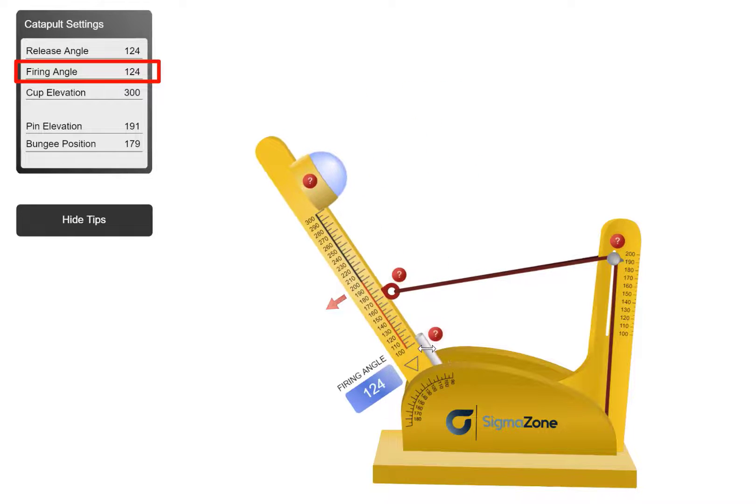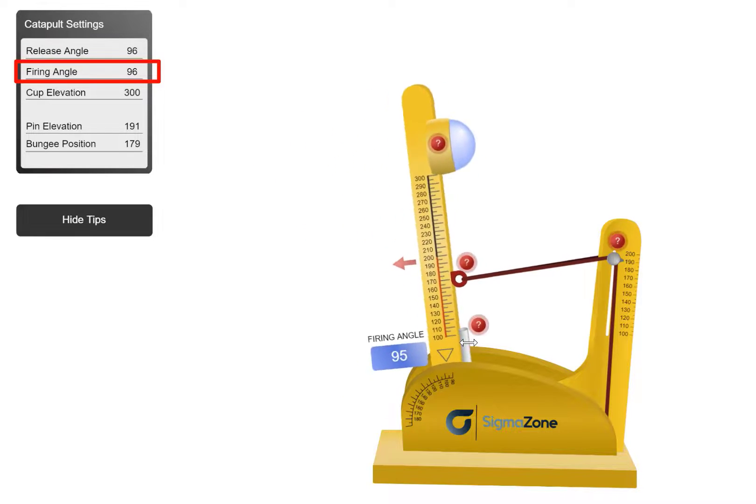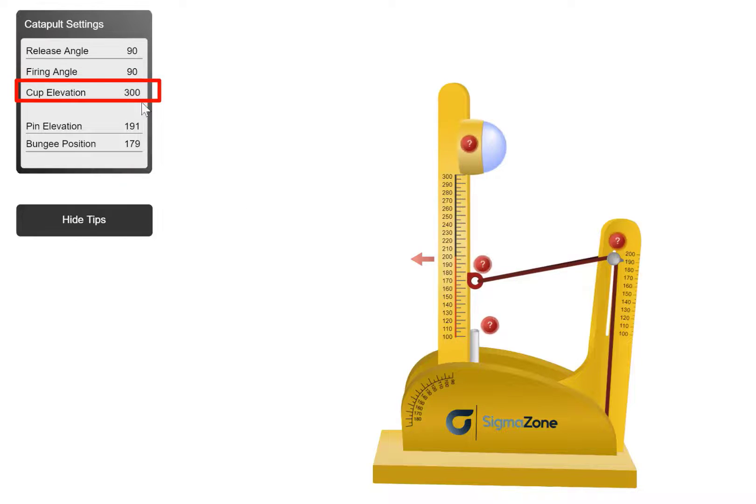The firing angle can be set here which is kind of a stopper for this arm. So you can change this angle. The third factor is cup elevation and you can move the cup. As you take the cup below, the throw will reduce. That's what we can expect.